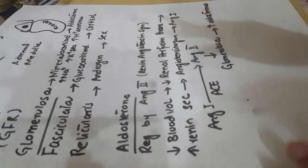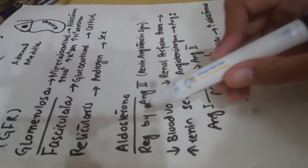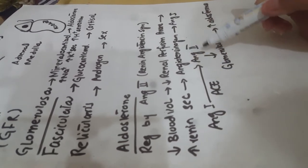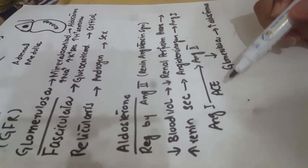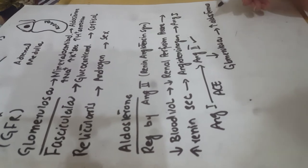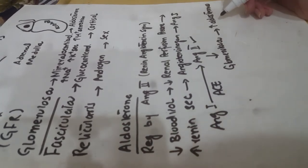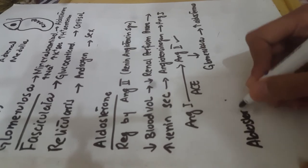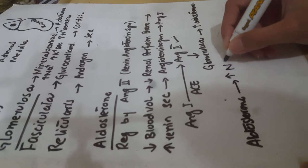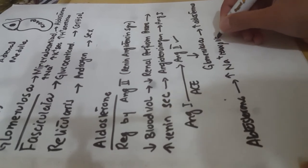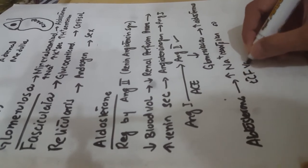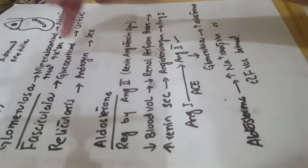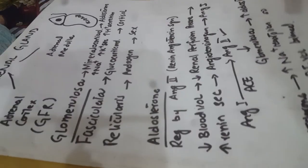This is how aldosterone works: whenever there is decreased blood volume or decreased renal perfusion pressure, renin is secreted. Renin leads to formation of angiotensin 2 via conversion of angiotensin 1 by ACE. Angiotensin 2 acts on zona glomerulosa, releasing aldosterone, which causes increased sodium resorption to restore extracellular volume balance.